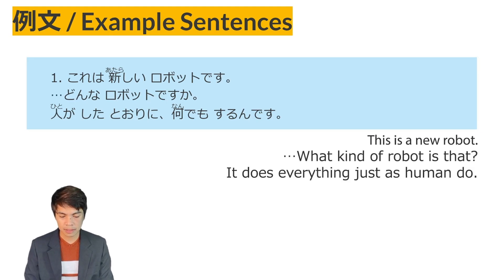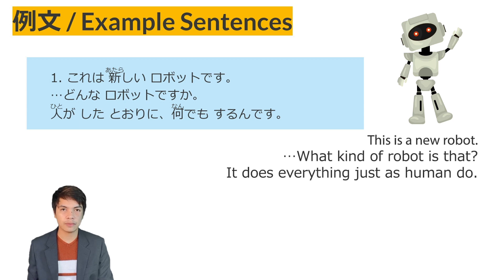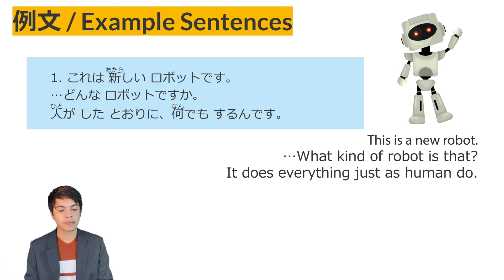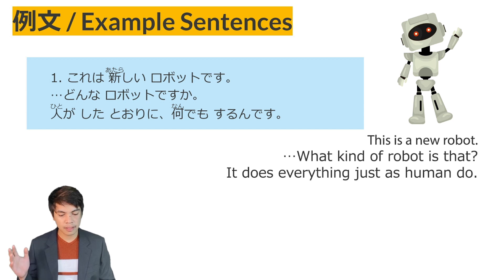Let's read example sentence number one. Kore wa atarashii robotto desu. Donna robotto desu ka? Hito ga shita tori ni nan demo surun desu. Someone said, 'This is a new robot.' The other person asked, 'What kind of robot is that?' He replied that it does everything just as humans do.